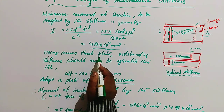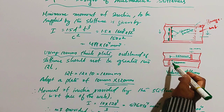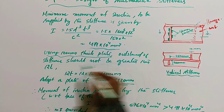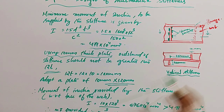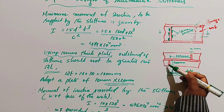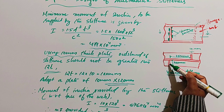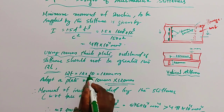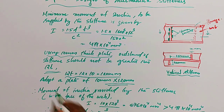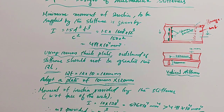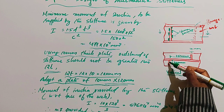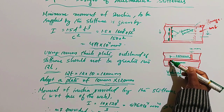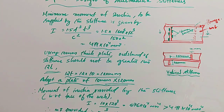Using a 10 mm thick plate, the outstand of the stiffener should not be greater than 12t. With t = 10 mm, 12t = 12 × 10 = 120 mm. So adopt a plate of 10 mm × 120 mm, where the thickness is 10 mm and the outstand is 120 mm.